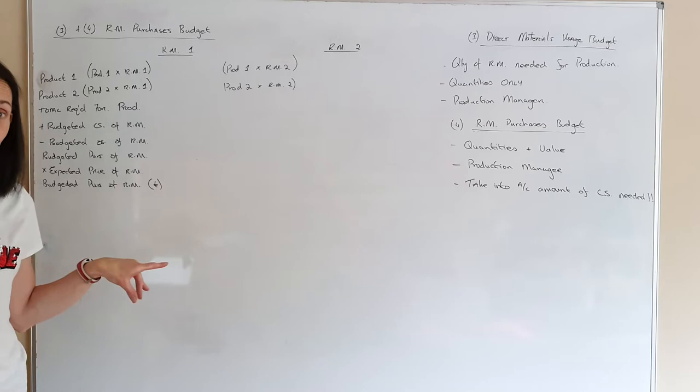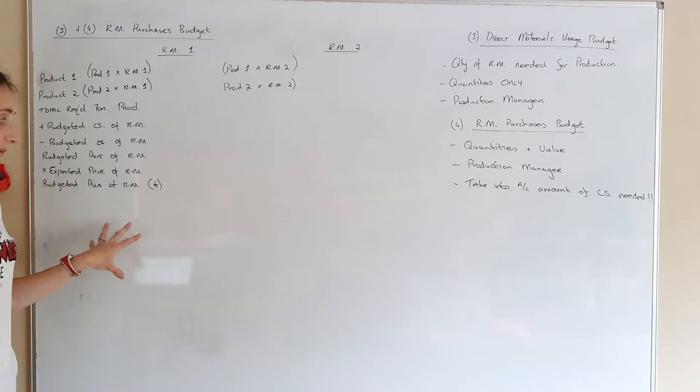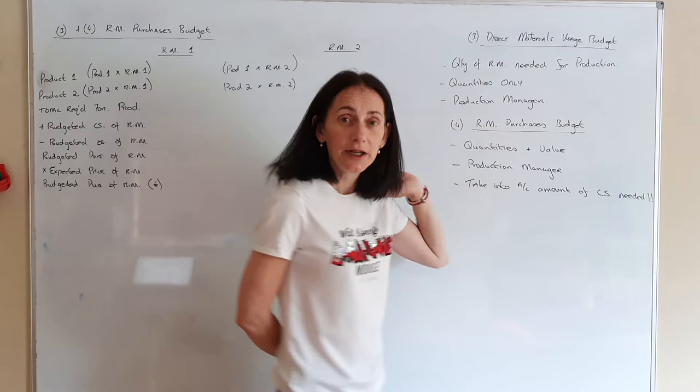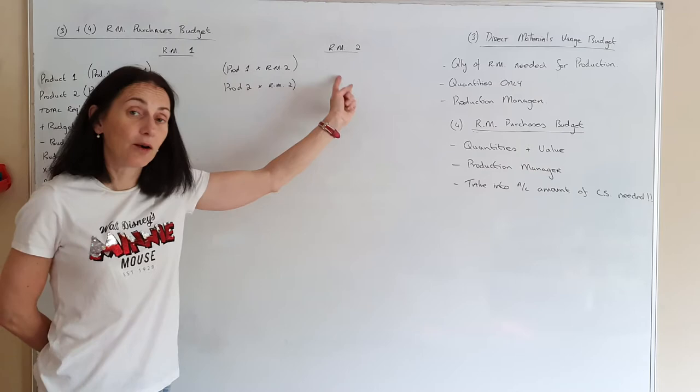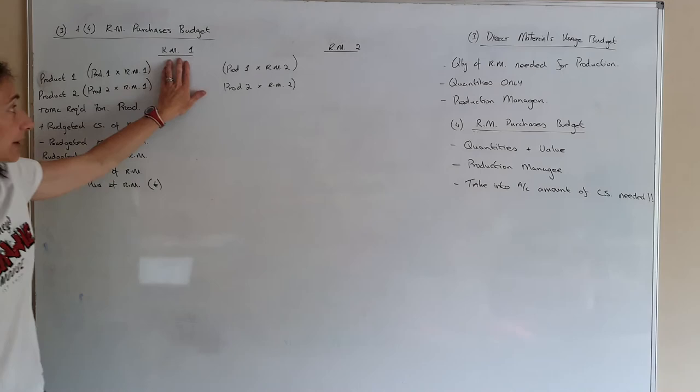I'm going to put these two together. This is a skeleton I'm going to fill in for question one of the ordinary level. Take down this blank one first — pause the video now to do that. Remember, this is about materials, so if you look at my columns, I don't have products here — I have materials, because what I'm interested in is how much materials I'm going to have to buy.